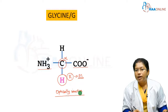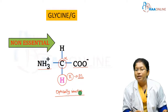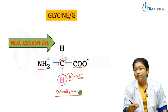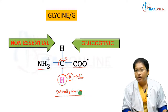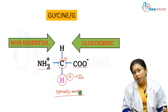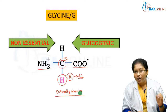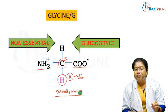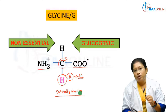Glycine is a non-essential amino acid, meaning it can be synthesized in our body. It is also a glucogenic amino acid, meaning that during the catabolism of glycine, the end product is glucose.